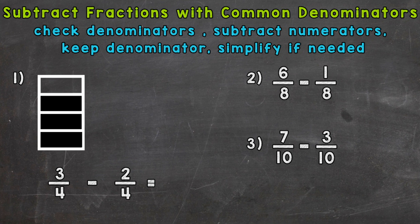Let's jump right into number one where we have three-fourths minus two-fourths. The first thing we need to do is check our denominators. We have a four and a four, so we have a common denominator.